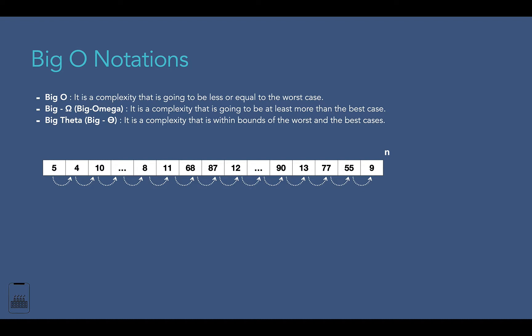In terms of Big Omega, it's a complexity that's going to be at least more than the best case — it's different from Big O. Here we measure the minimum time needed to execute an algorithm. There might be cases where we want to know the minimum execution time. If the best case scenario for executing the algorithm is two seconds, in terms of Big Omega, it will never be less than two seconds.